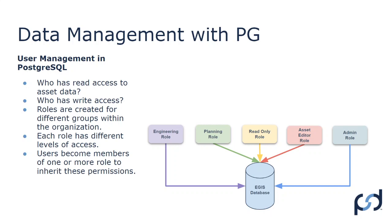Here's an example: we might have an engineering role, a planning role, a read-only role, an asset editor role, and an admin role. These roles on their own do nothing — they are applied to different data sets within the database. Engineering layers might have read and write permission for engineering, but all layers should have read-only ability for all staff. Even layers in the public works schema — drains, manholes, and so on — we want everyone to be able to at least see them. Planning might not be involved in asset management and should not be a member of the asset editor role, whereas some engineers do edit assets.